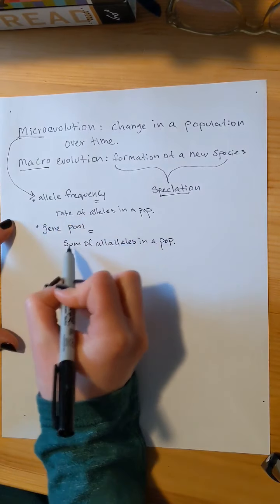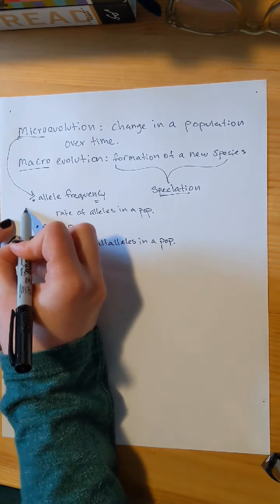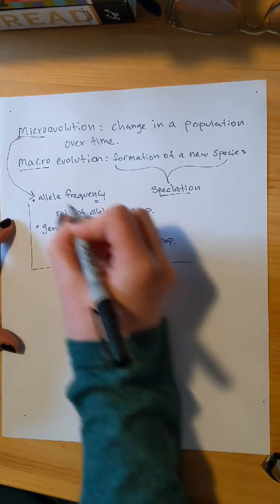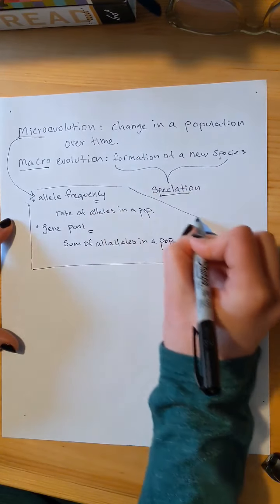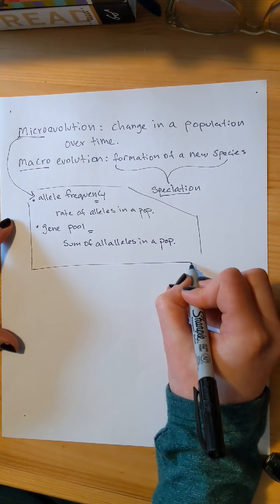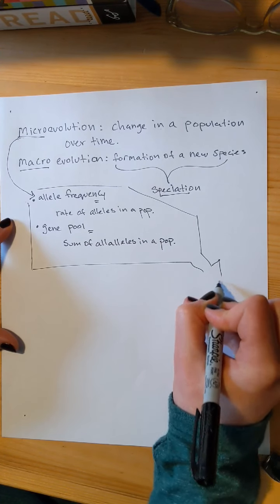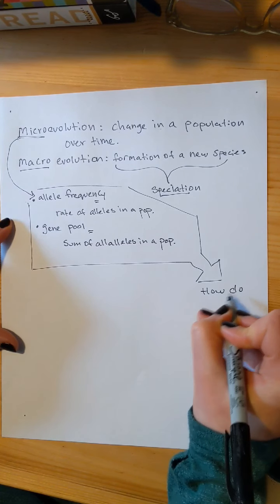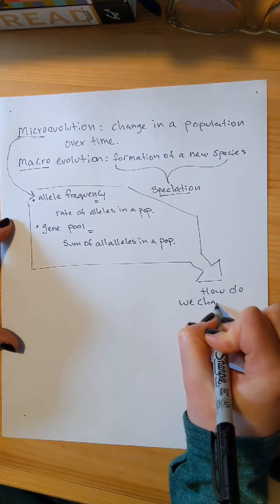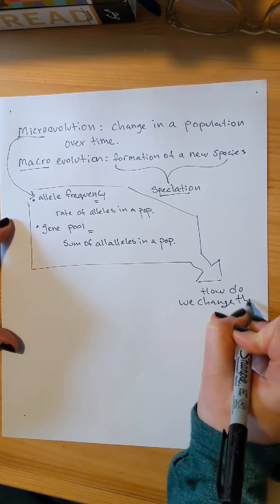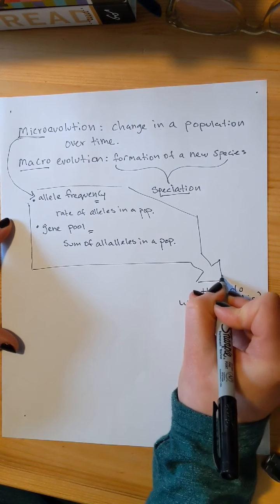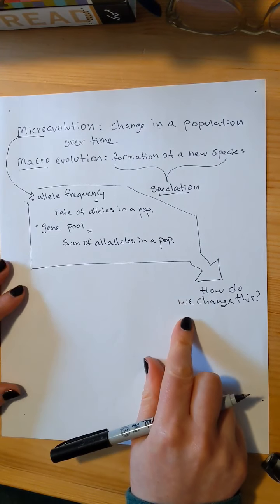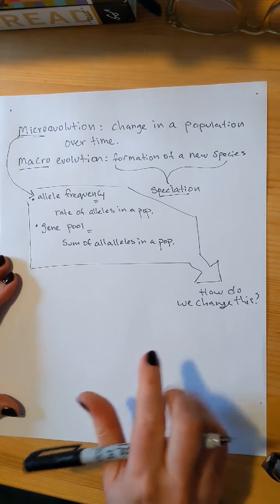Changing a population over time, which is microevolution, can, but not always, result in macroevolution, which is the formation of a new species. We call that speciation. How do we change the allele frequency and the gene pool over time?